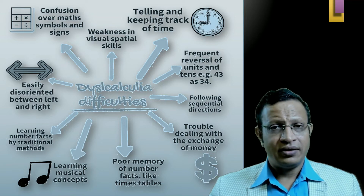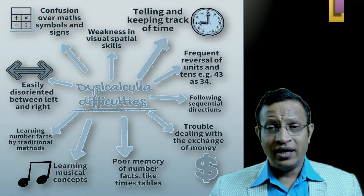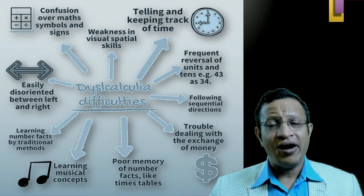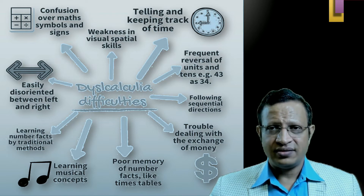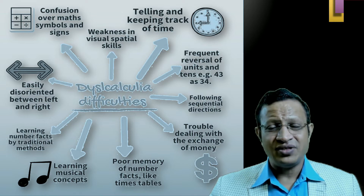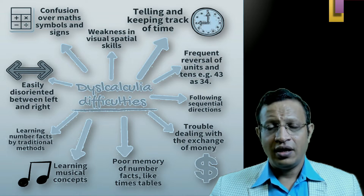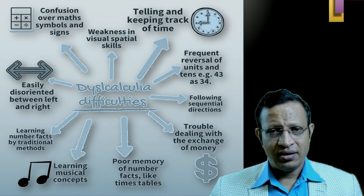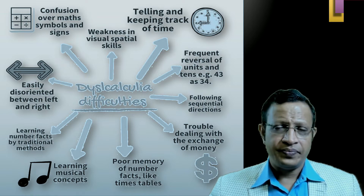The signs and symptoms of dyscalculia include: difficulty in counting backwards, difficulty in remembering basic arithmetic facts, slow performance in calculation, weak mental arithmetic skills, taking a large amount of time to solve problems, unable to understand mathematical signs and symbols, getting confused between symbols and numbers, unable to understand the concepts of multiplication and division. Poor sense of numbers and estimation, unable to compare numbers and the size of numbers — similarities are very difficult for them.